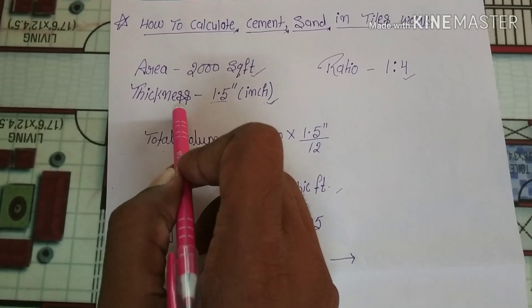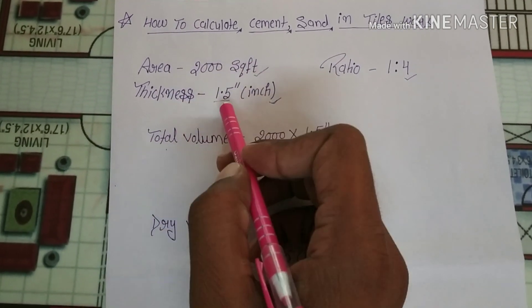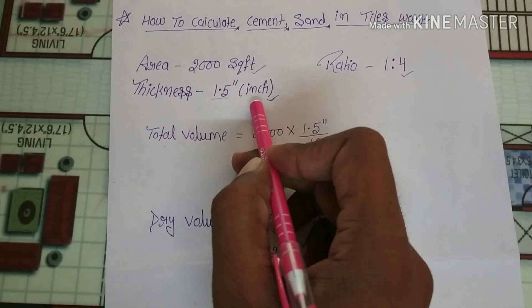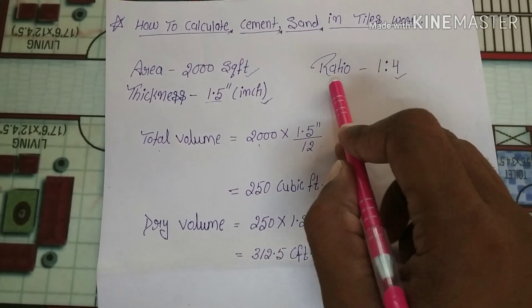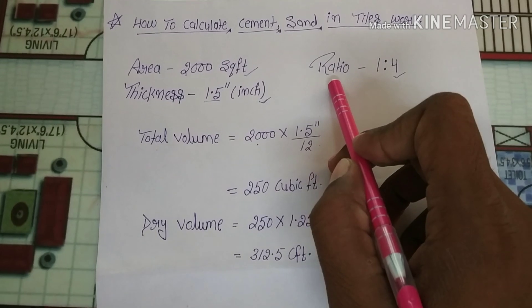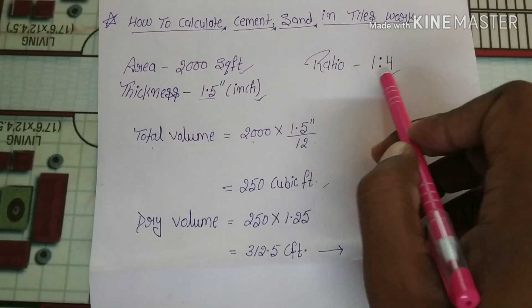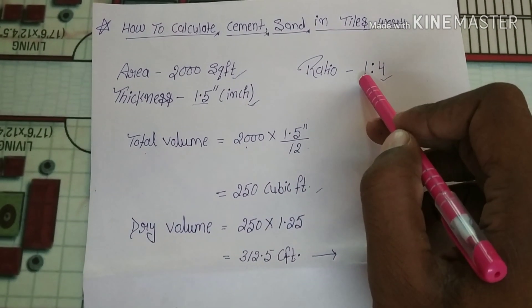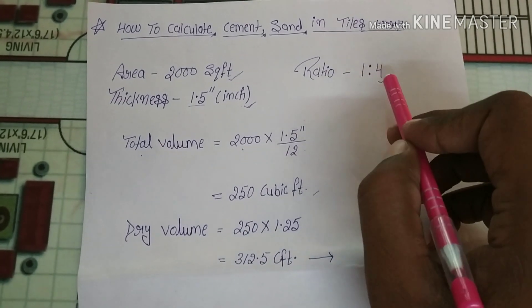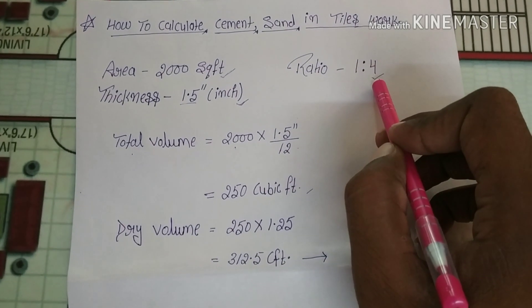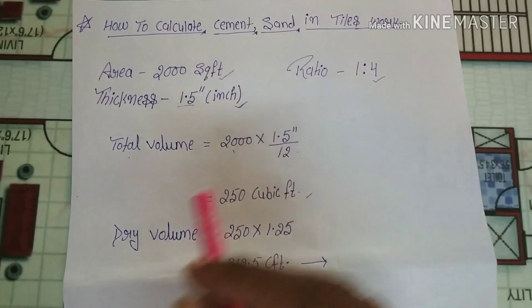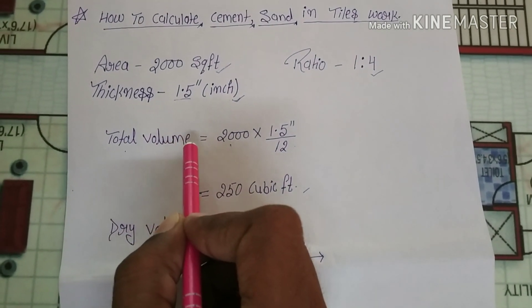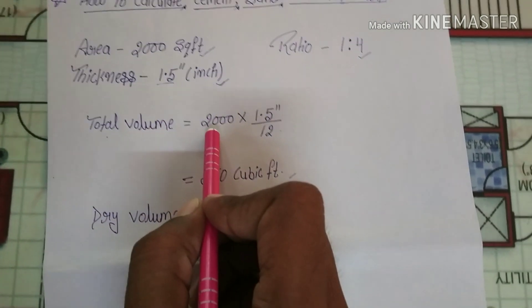Consider the thickness of the mortar 1.5 inches and the ratio of cement and sand is 1:4. In this ratio, one proportion is cement and four proportions is sand. Now we will find out the total volume.